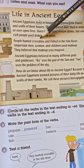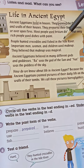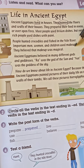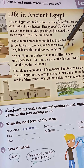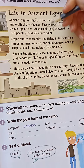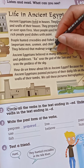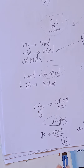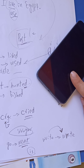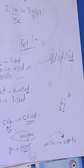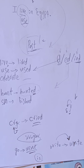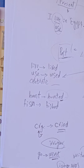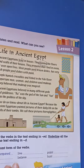Important men, women, and children used makeup. They believed that makeup was magical. Here 'was' is an irregular verb — in the present we say 'is' or 'are.' For example, 'this mobile is black' in the present, but 'it was black' in the past — something that happened in the past and is over.